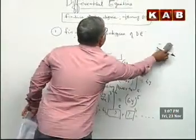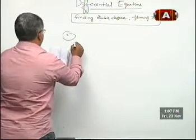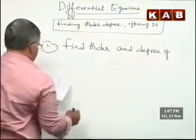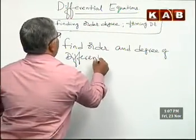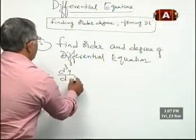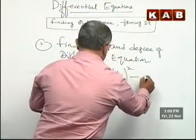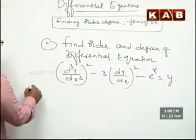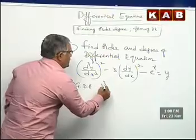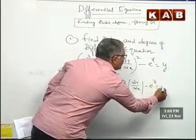Next question, continuing with finding order and degree — second problem. Find the order and degree of the differential equation: (d³y/dx³)² − 3(dy/dx) − eˣ = y. That is the given differential equation.